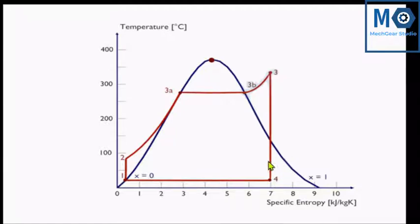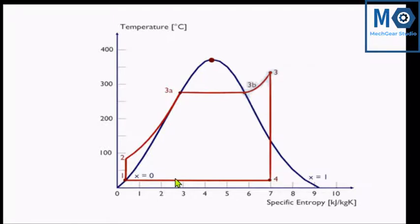In real practice, isentropic expansion is not possible due to many reasons. The point 4 depends on the arrangement; this point may be at any place — it may be at the saturated point, or may be in the wet region after condensation. The pressure of the condensation process may be variable. Suppose steam is supplied to a condenser — then the pressure may be less than atmospheric pressure. This is the condensing type turbine, because maximum expansion takes place. P2 is the higher pressure and P1 is the lower pressure, so maximum work done will be available.